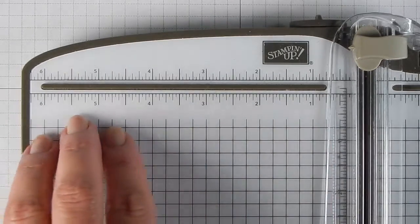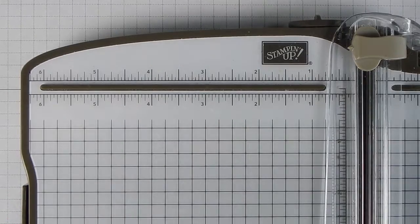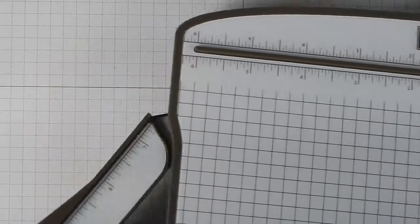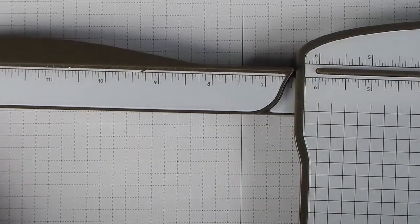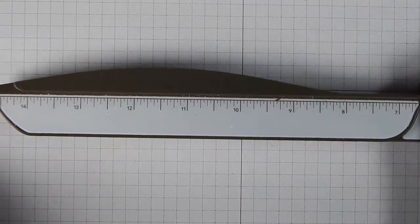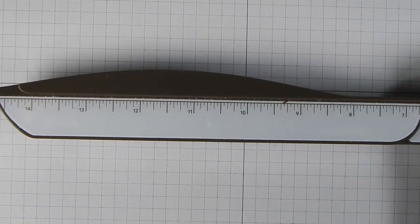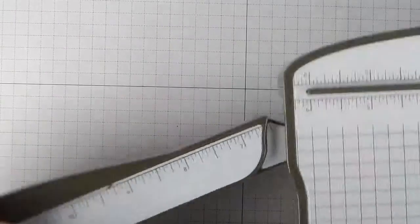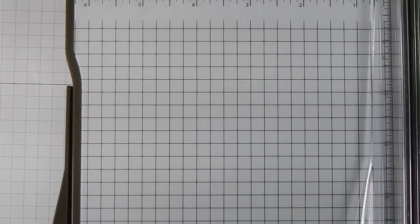The other thing I like is the fact that the numbers are under clear plastic. They aren't going to rub off. It has this swing arm that goes out to 14 inches. So, for those of us that like to scrapbook, it's easy to trim your 12x12 paper down.